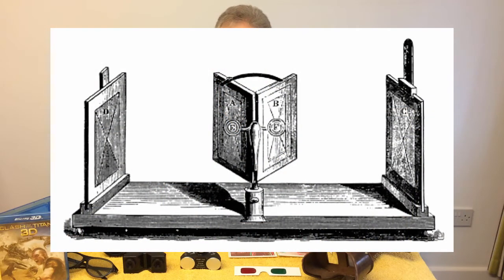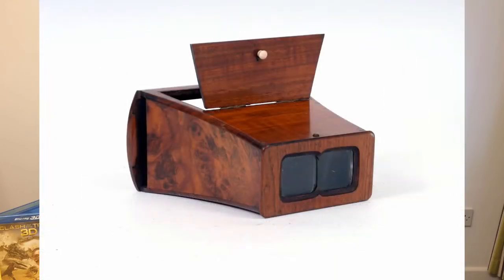The combining of two images into one stereoscopic image was actually known about way before photography was even invented, but it's thanks to Sir Charles Wheatstone who invented the reflecting stereo viewer in the early 1830s that 3D photography was really born. However, it wasn't until around 1850 when Sir David Brewster developed a simple viewer that could be handheld that 3D photographs could easily and cheaply be viewed.